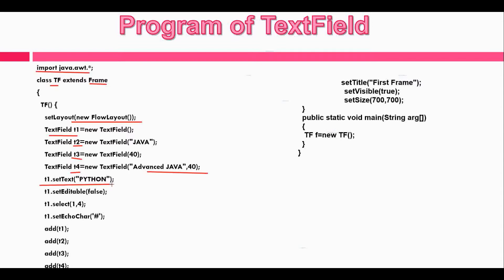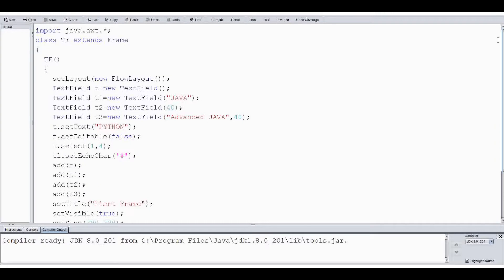Here we set text to t1 as 'Python'. Here we use the setEditable() method on t1 to make the TextField uneditable. Here we select text from t1. Here we set echo char to t1 by passing hashtag. Here we add all components to the Frame. These are the methods of Frame. Let's see the output of this program. I wrote this code in DrJava — you can use any Java IDE as per your convenience. Let's compile the program and our compilation is completed without any error.